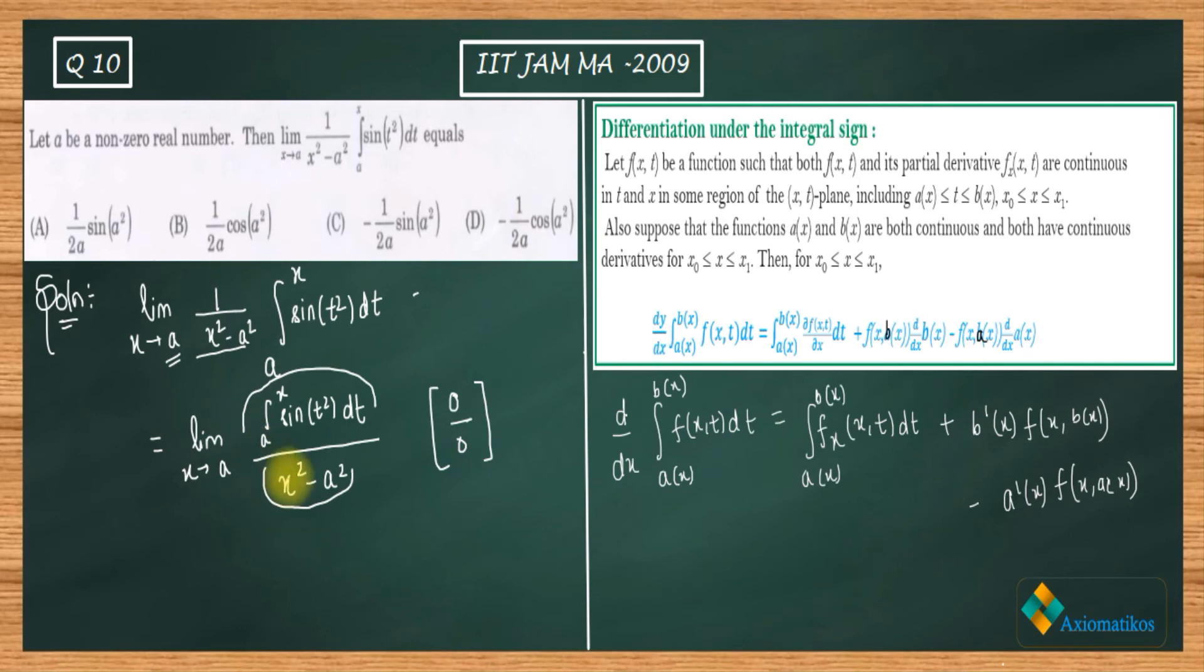Now let us come to our case. This sine t squared is our f(x,t). It's your job to check whether this f(x,t) is continuous or not and whether its partial derivative is continuous. I am going to differentiate directly. The partial derivative of this f(x,t) is zero, so I don't need that part. If you differentiate it using this rule you will end up with this, and on the denominator part you will end up with 2x.